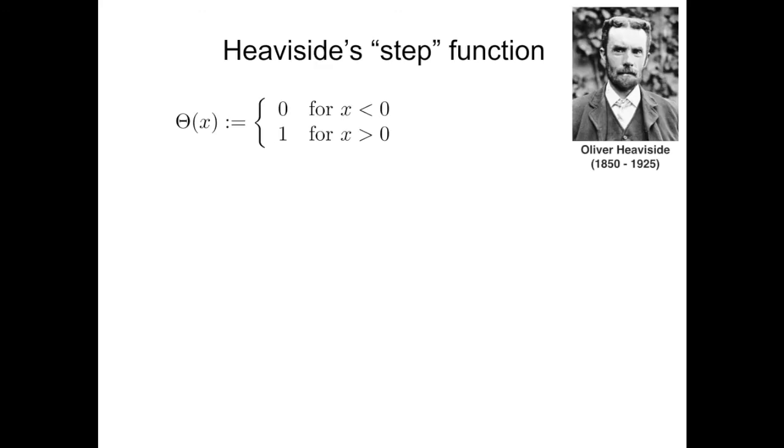This function, this step function, is called also Heaviside's function due to a British mathematician and engineer Oliver Heaviside in the last century, who defined this function as follows: for values of the argument that are negative, the function is zero, whereas for values that are positive, the function is equal to one.